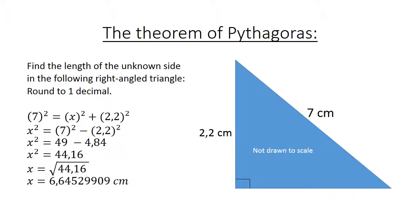x equals 6.645 centimeters. Round it to one decimal: x equals 6.6 centimeters.